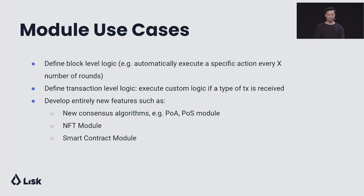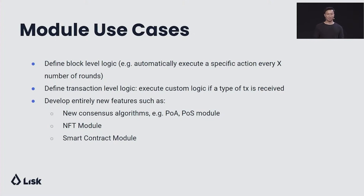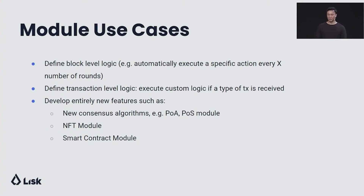Now I'll talk about some module use cases. The main two functionalities are: you can define block-level logic — for example, you can automatically execute a specific action every X number of rounds — and you can also define transaction-level logic, for example executing custom logic if a specific type of transaction is received. You can also develop entirely new features such as new consensus algorithms — for example, a proof of authority or proof of stake module — and you can create your own NFT module or your own smart contract module.